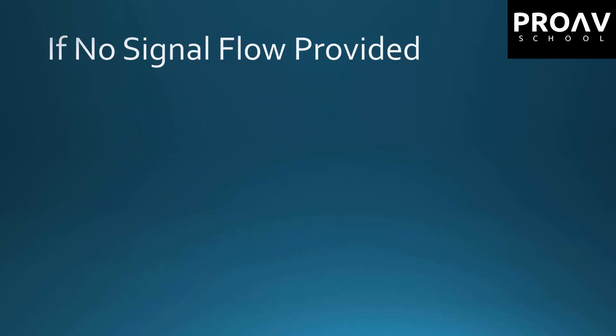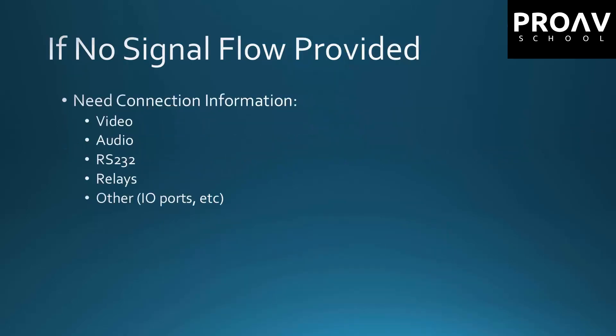If you're not given a signal flow drawing, you need something to go by. So you're going to need to know how the programmer connected everything in their code — what sequence the video inputs and outputs are hooked up in, where the audio is supposed to hook up, where the RS-232 control ports are and which number they are, how the relays are set up, and if there's any I/O ports or other stuff like that.